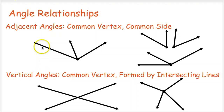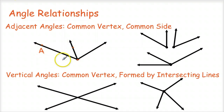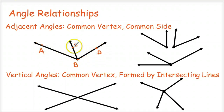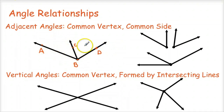In this case here, I'm going to call this angle ABC and this angle CBD. So angles ABC and CBD are adjacent. This is an example of adjacent angles.